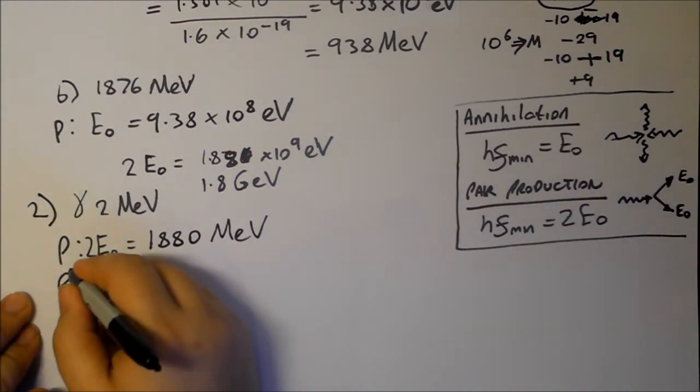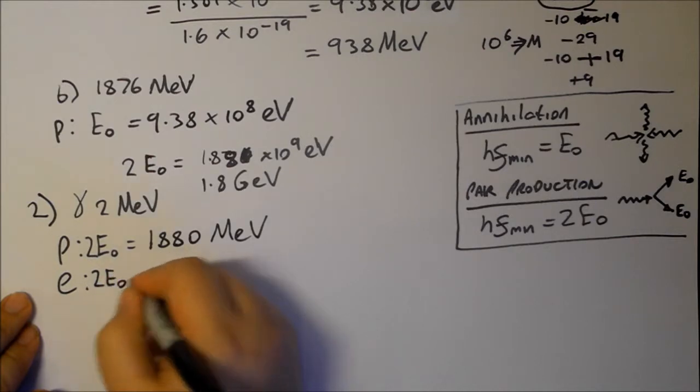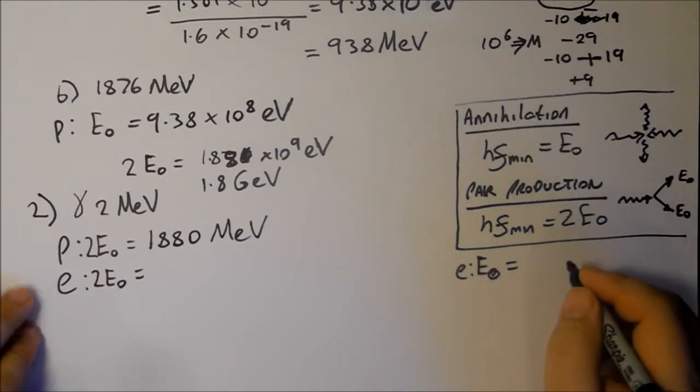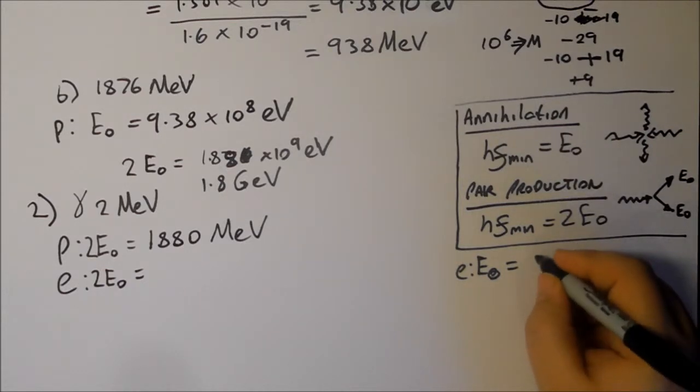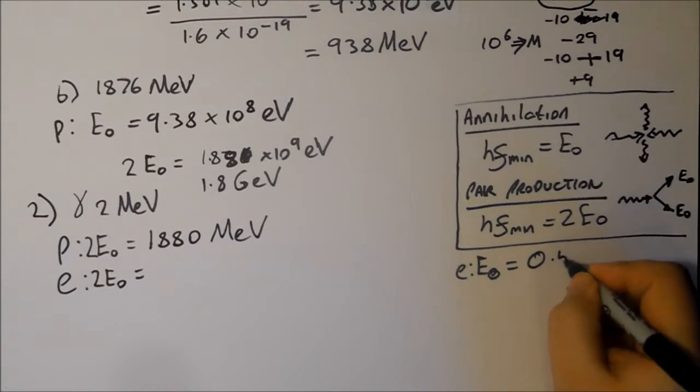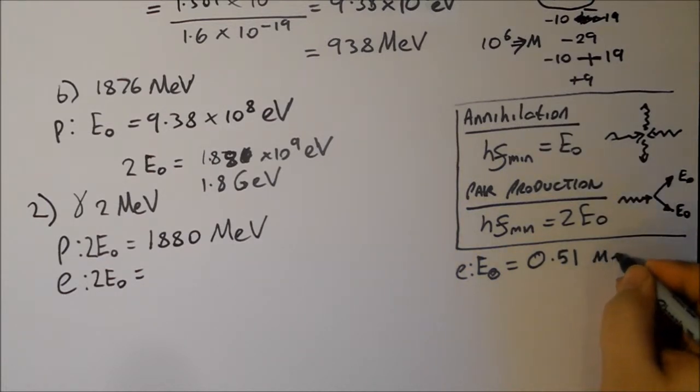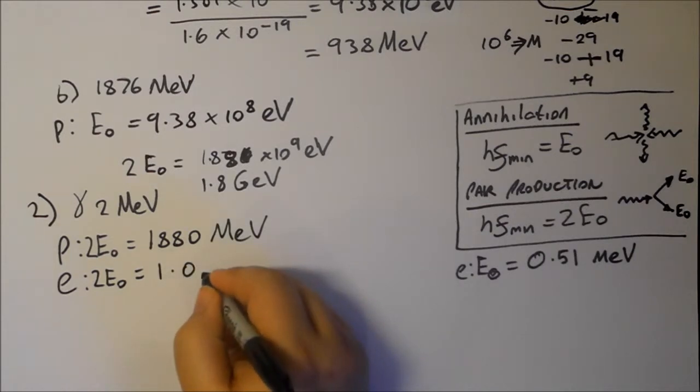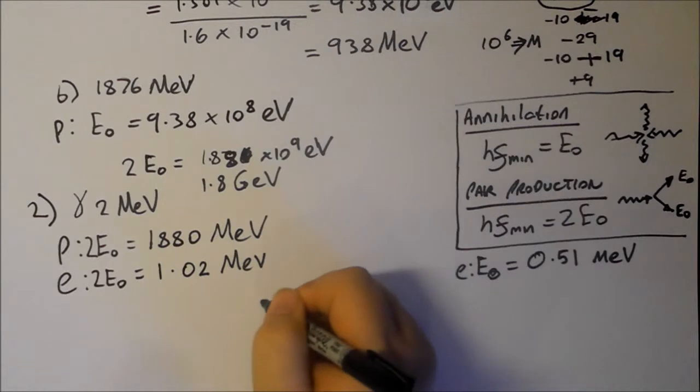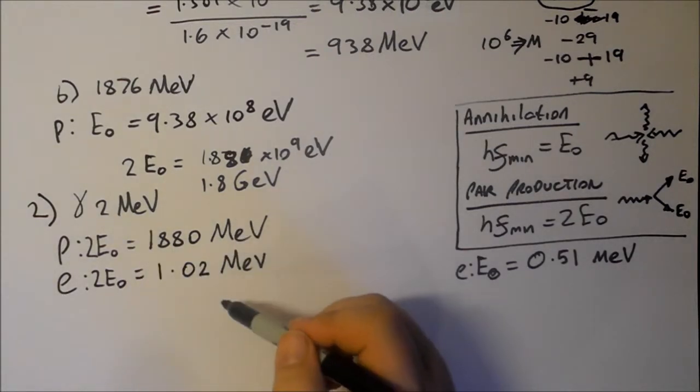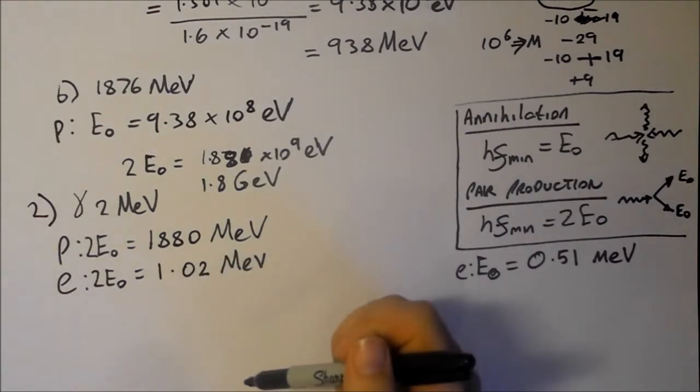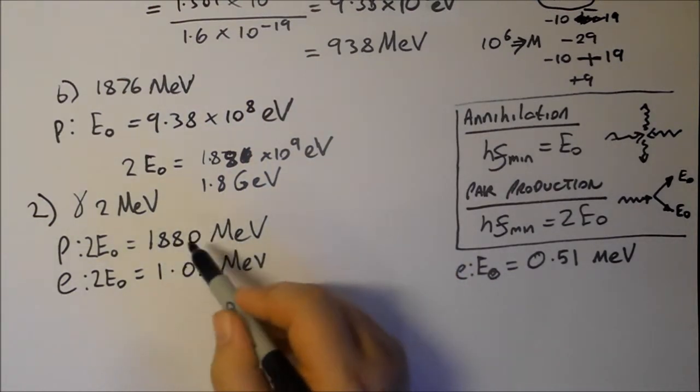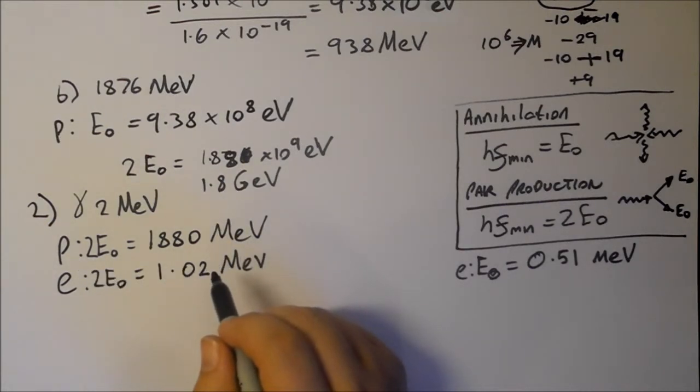For an electron, 2E0 is equal to, we need to know the E0 of an electron. The rest energy of the electron is 0.51 MeV. Double that, which would be 1.02 MeV. We can see that 2 MeV is enough for an electron-positron pair, they both have the same rest energy, but not enough, quite considerably not enough, to create a proton-antiproton pair.